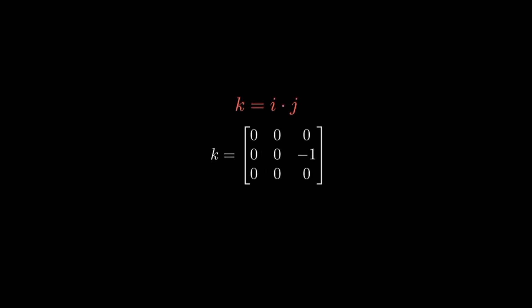Now K, which equals I, J, is row 1: 0, 0, 0, row 2: 0, 0, negative 1, row 3: 0, 1, 0. And L, which equals J, I, is row 1: 0, 0, 0, row 2: 0, 0, 1, row 3: 0, negative 1, 0.